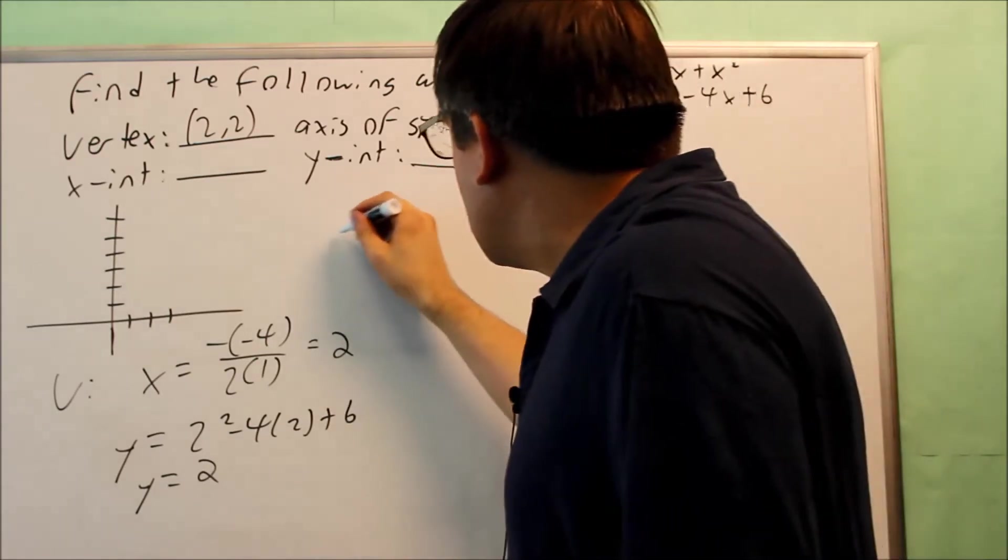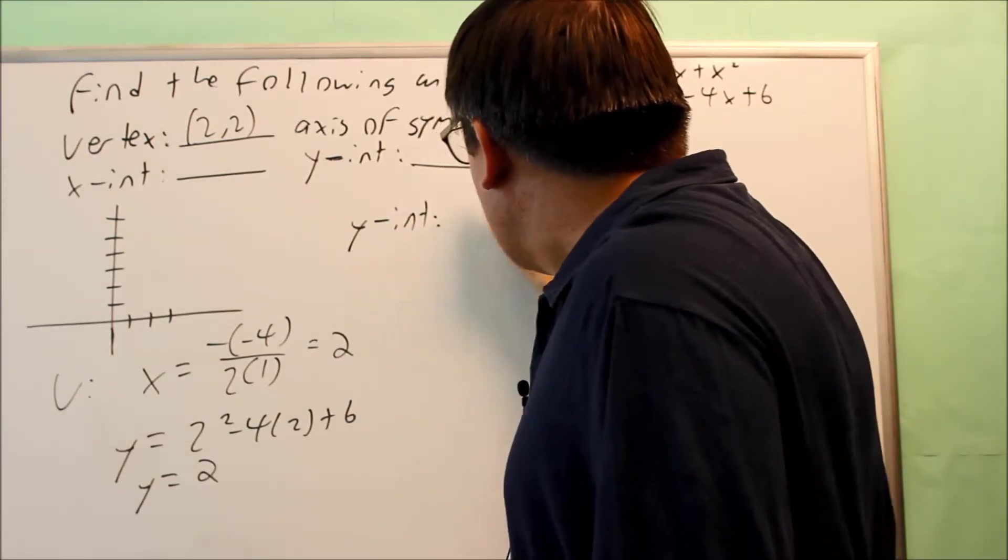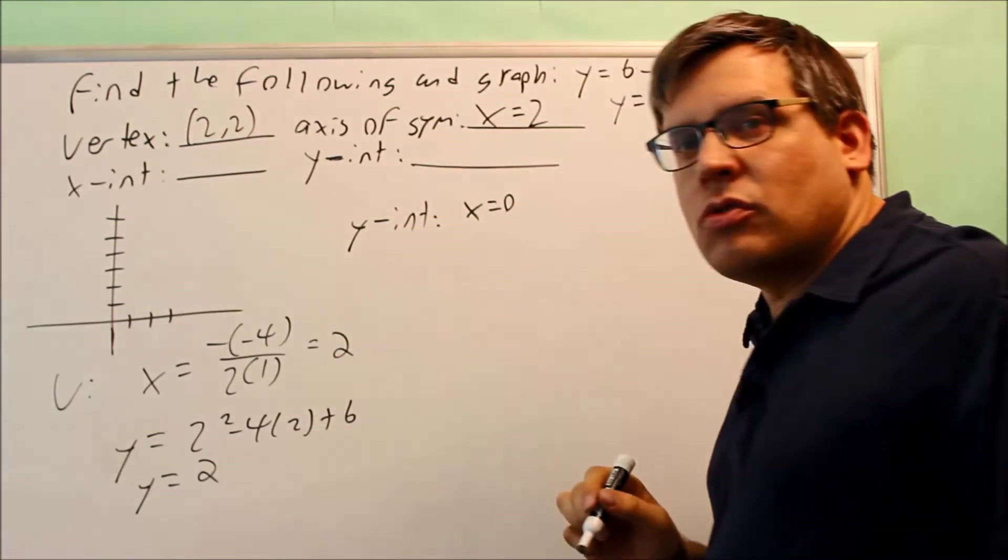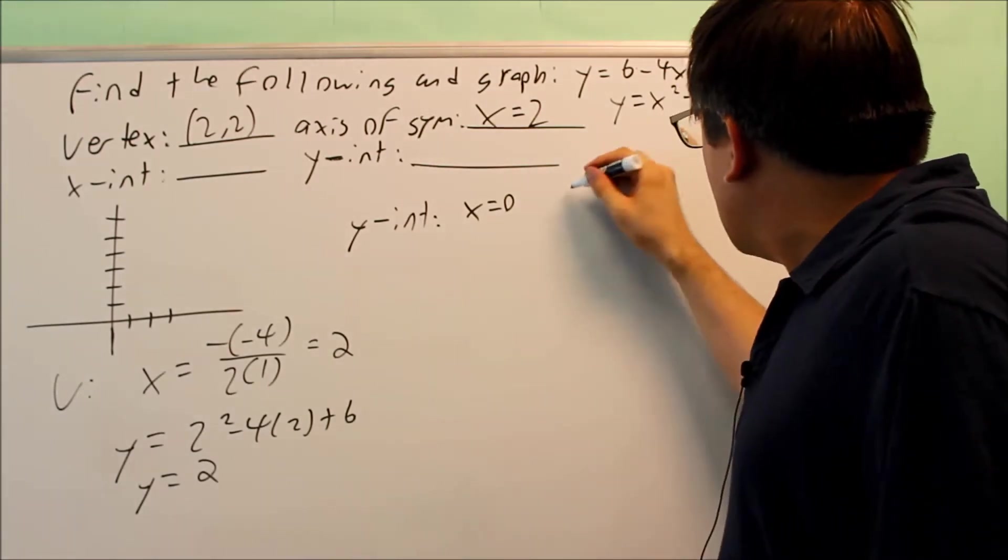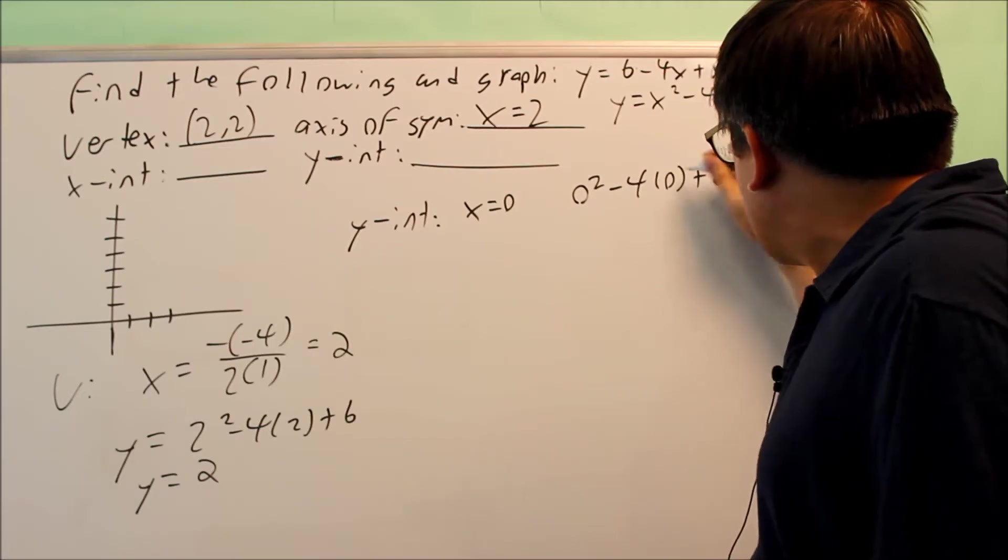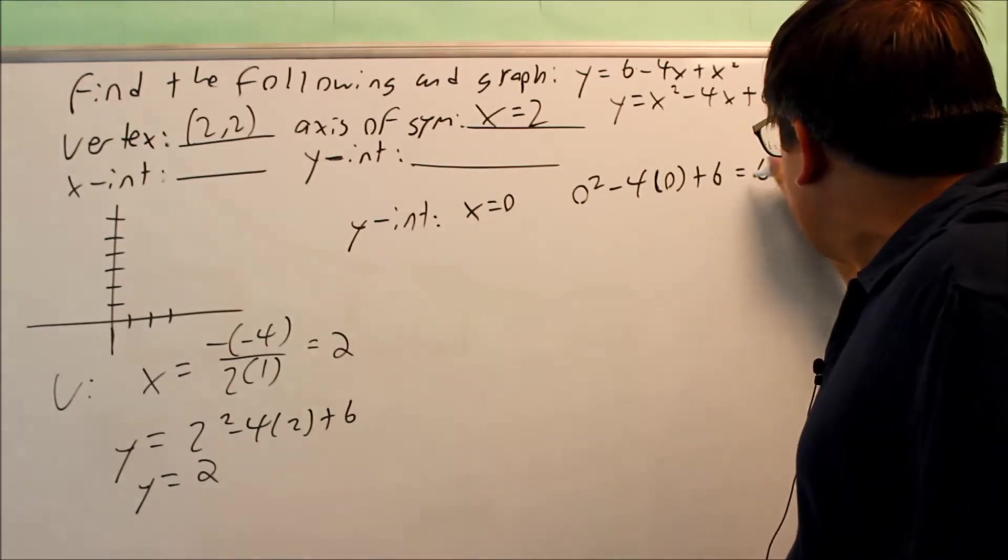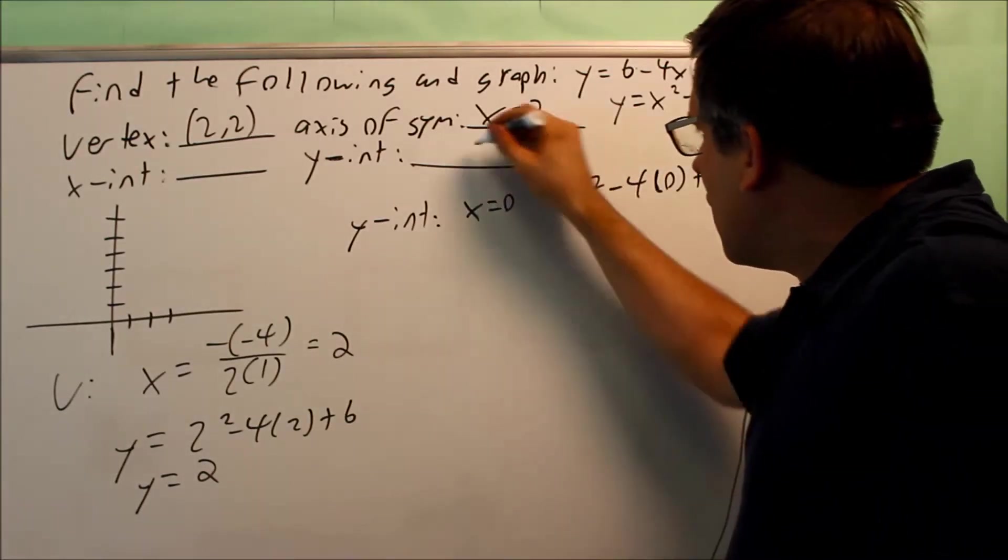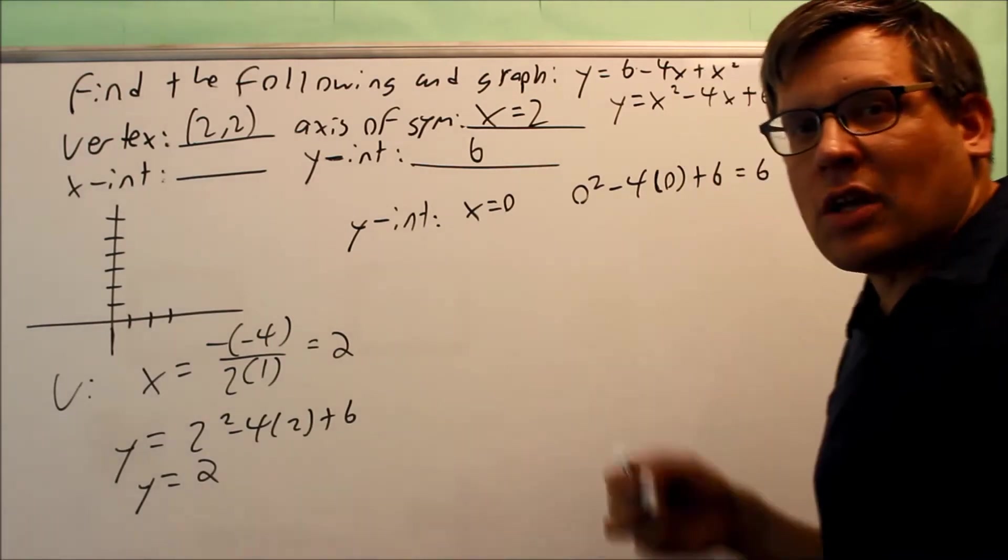Okay, let's do the y-intercept. The y-intercept, you're going to make the x equal to 0. If you put that in here, you get 0 squared minus 4 times 0 plus 6. And that's going to give us 6. So that means it crosses the y-intercept at 6.